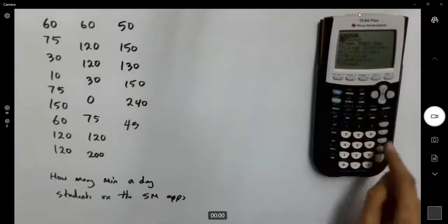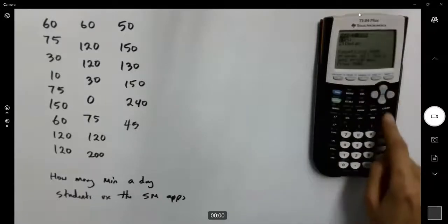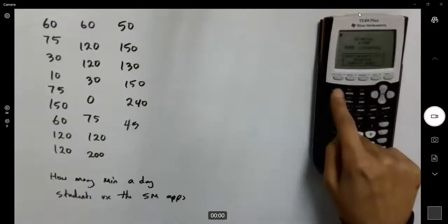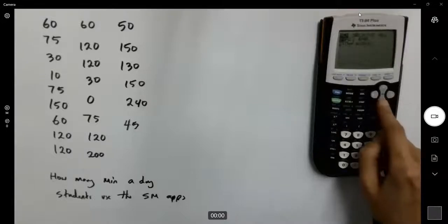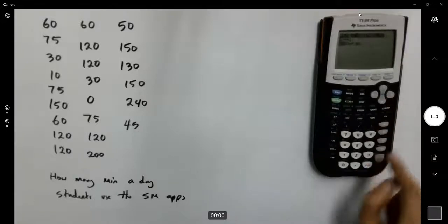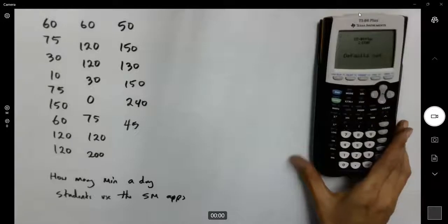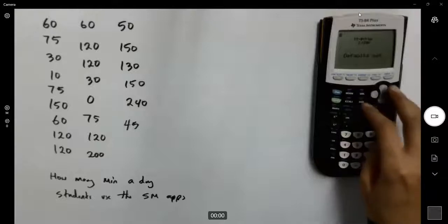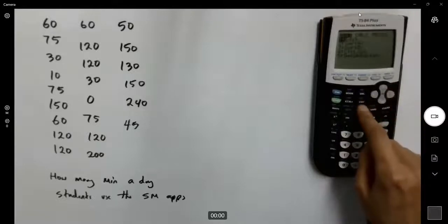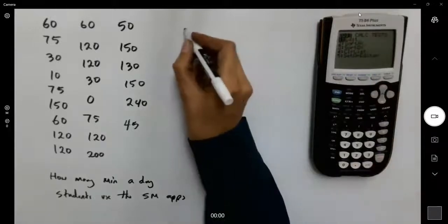Reset your calculator. Go to second, plus, and reset all RAM. Go to second, plus, and reset defaults. So here you reset your calculator. Click on stat, go to edit, so enter the data.